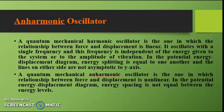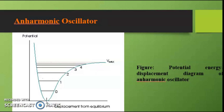A quantum mechanical anharmonic oscillator is one in which the relationship between force and displacement is nonlinear. In the potential energy vs. displacement diagram, the energy spacing is not equal between the energy levels. As you can see in the given figure, the potential energy is plotted against displacement, and this diagram is not symmetrical about the reference point; the energy spacing between different levels is also not equal.